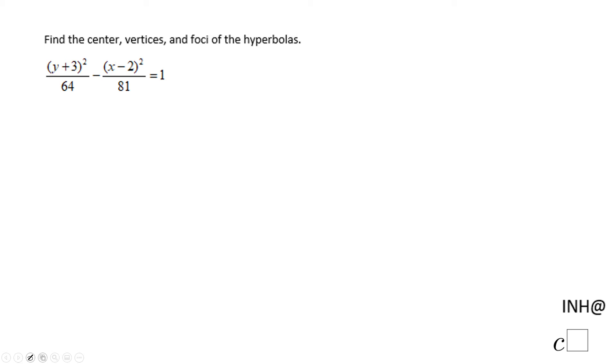Welcome or welcome back. I need help at C-Square. In this example, we're going to find the center, the vertices, and foci of this hyperbola. The center will be (2, -3) because we have x minus 2 and y plus 3, which is the same thing as y minus negative 3.